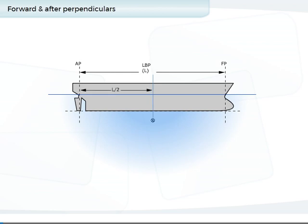Mid-length, or amid ships, is the midpoint between the perpendiculars. This is found by halving the distance LBP.